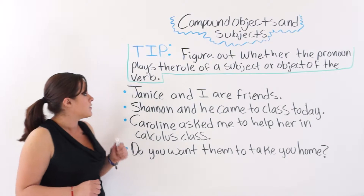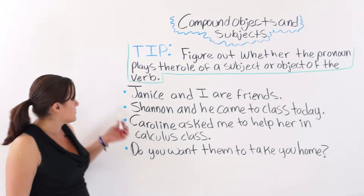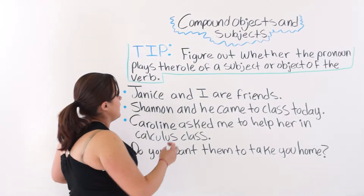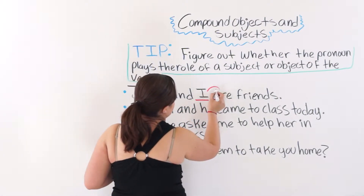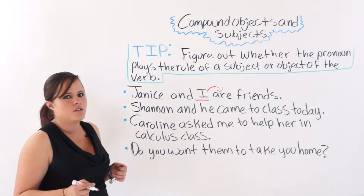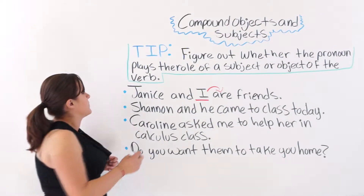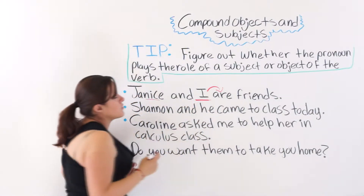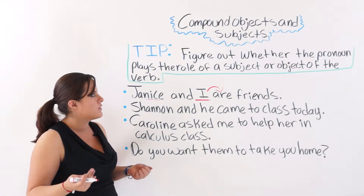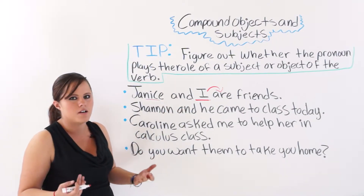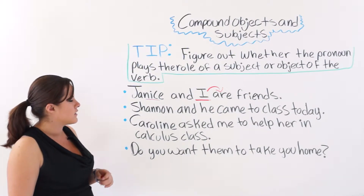I have four examples here written on the board. The first one says 'Janice and I are friends.' As you can see, 'I' is a subject of this verb. Janice is a noun and 'I' is a pronoun — that is what makes it a compound subject. 'I' is the subject of 'are.'